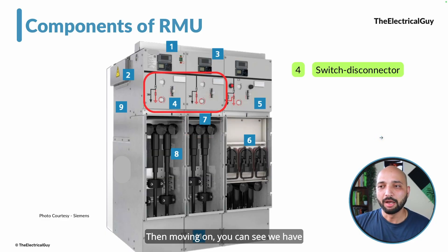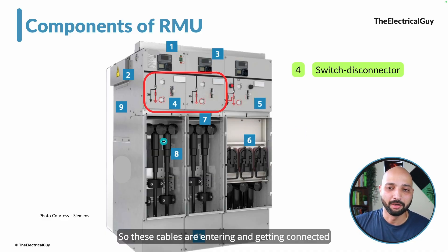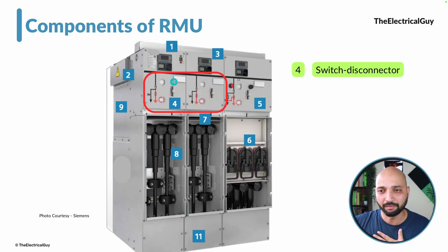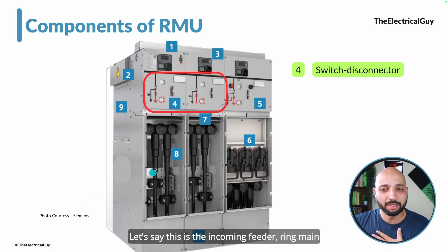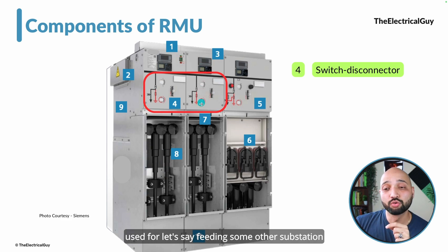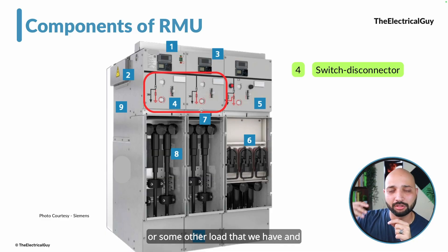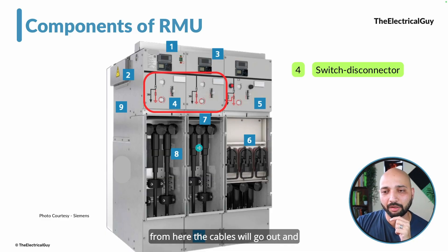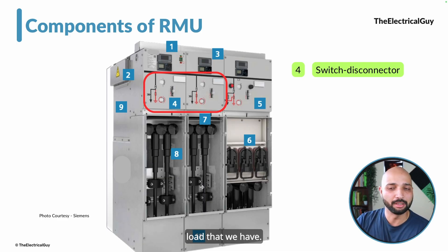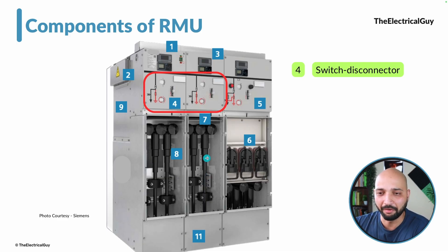Moving on, we have switch disconnectors connected here. The cables are entering and getting connected to our three-position switch disconnector. Let's say this is the incoming feeder — the ring main feeder is coming in. The second switch is used for feeding some other substation or load, and from here the cables go out and connect to another load.